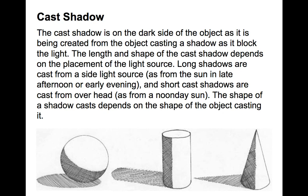Cast shadow: The light is coming from one side and the shadow is on the opposite side. The cast shadow is on the dark side of the object, created as the object blocks the light. The light and shape of the cast shadow depend on the placement of the light source. Longer shadows are cast from a side light source, such as the sun in late afternoon, and shorter cast shadows from overhead, as with a noonday sun. The shape of a shadow cast depends on the shape of the object casting it.